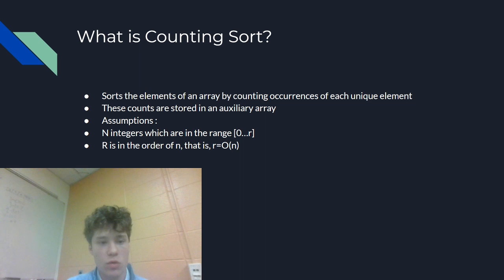So what is counting sort? Counting sort sorts the elements of an array by counting occurrences of each unique element. This is stored in a new array called count.